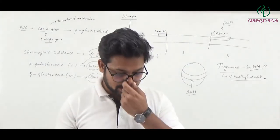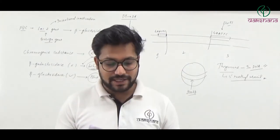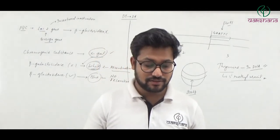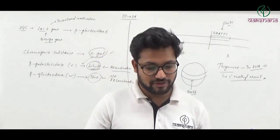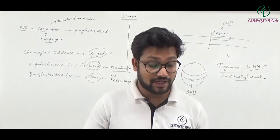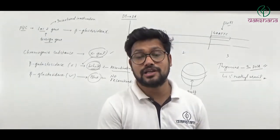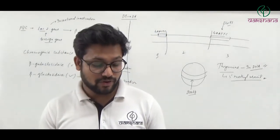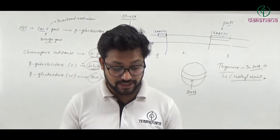Question number forty-two: In Mendel's experiment, color of seed coat, nature of flower, position of flower, color of pod, height of stem, and shape of seed — these are all phenotypes. Question number forty-two's third answer is correct.